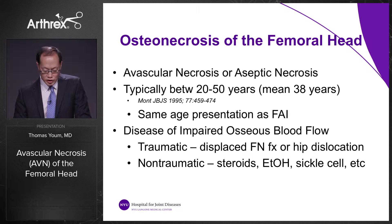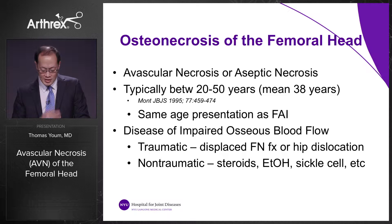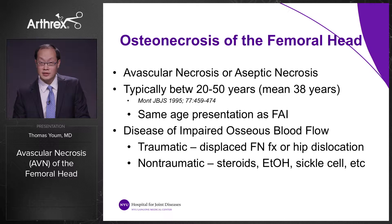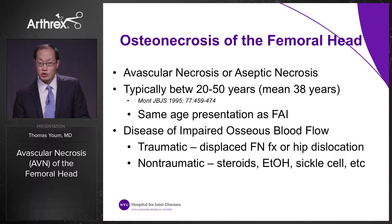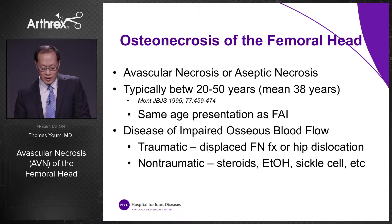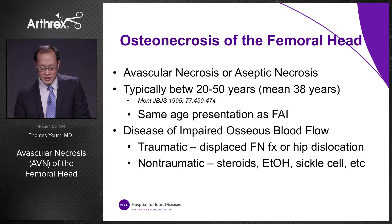Avascular necrosis, or aseptic necrosis, of the femoral head typically occurs in patients between 20 and 50 years; the mean is 38 years — the same age presentation as femoral acetabular impingement. It is a disease of impaired osseous blood flow. It can be traumatic, involving displaced femoral neck fracture or hip dislocation, and also non-traumatic, associated with steroids, alcohol abuse, sickle cell anemia, and similar conditions.